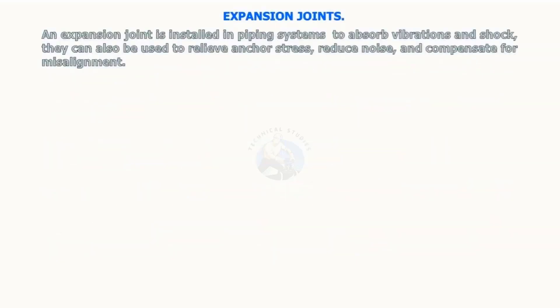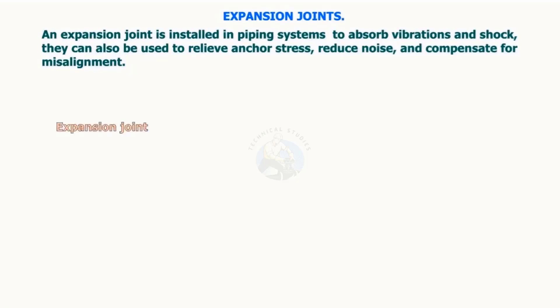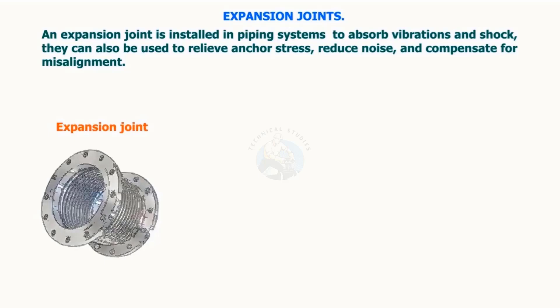An expansion joint is installed in piping systems to absorb vibrations and shock. They can also be used to relieve anchor stress, reduce noise, and compensate for misalignment.